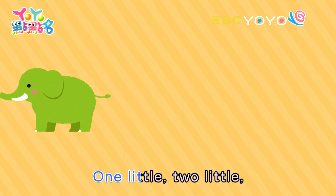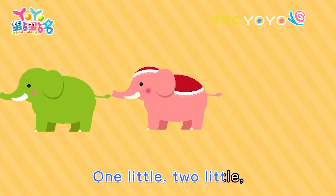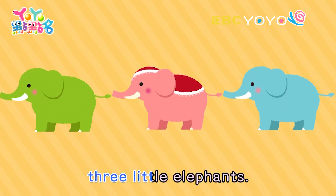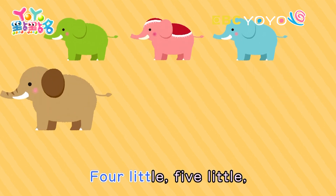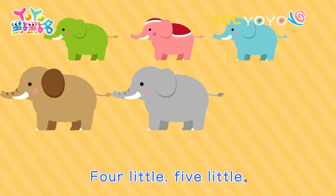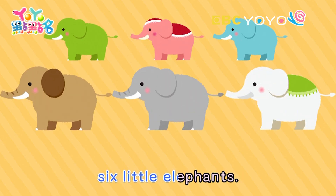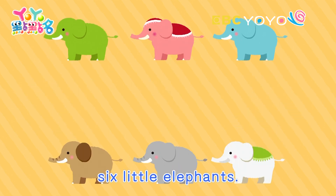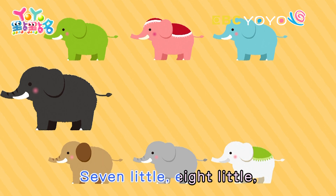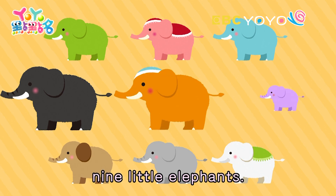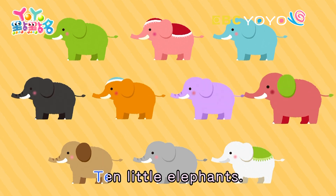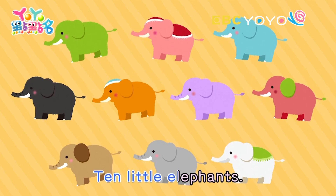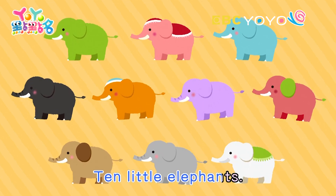One little, two little, three little elephants. Four little, five little, six little elephants. Seven little, eight little, nine little elephants. Ten little elephants.